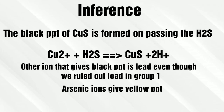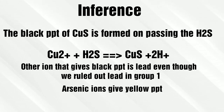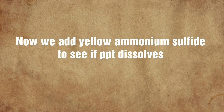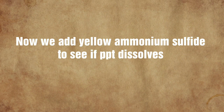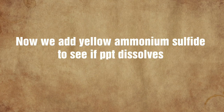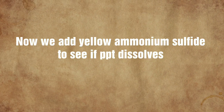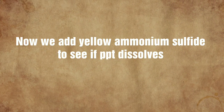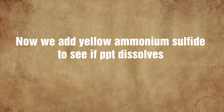The copper ions reacted with hydrogen sulfide forming the black precipitate of copper sulfide. If it was arsenic ions we would have got a yellow precipitate. Now we have two ions in group 2, that is copper and arsenic. To differentiate between these we add ammonium sulfide and check the solubility of the precipitate.